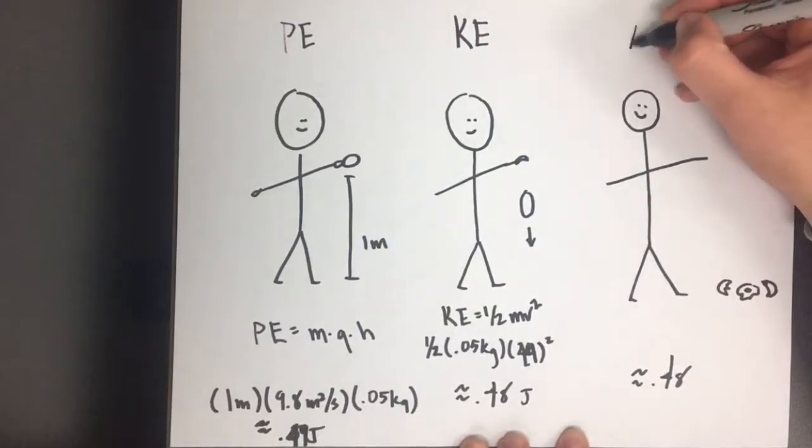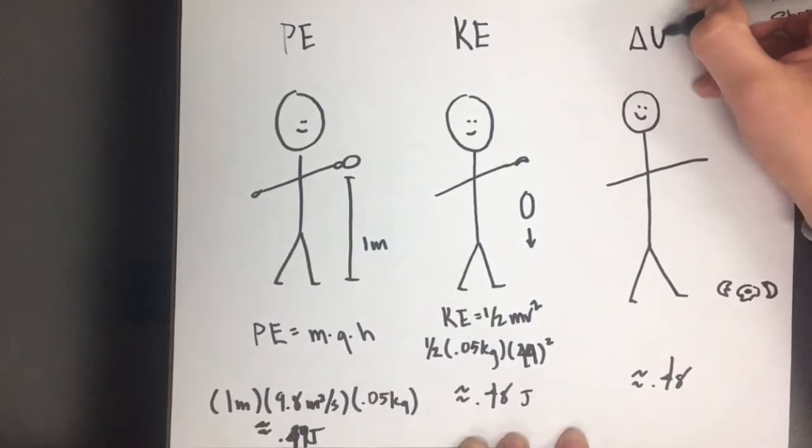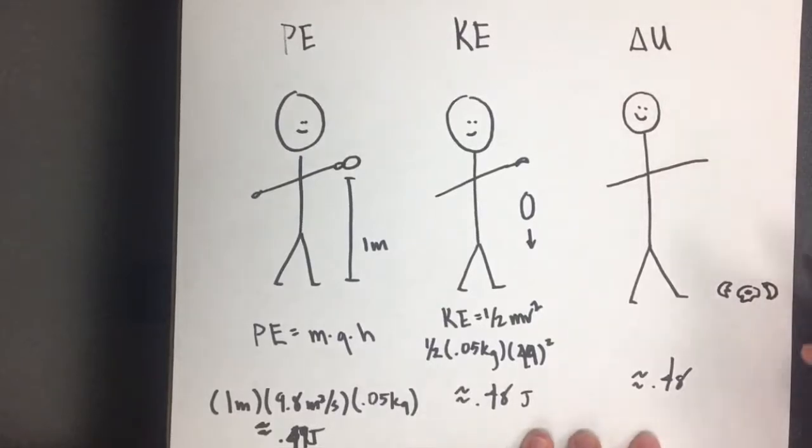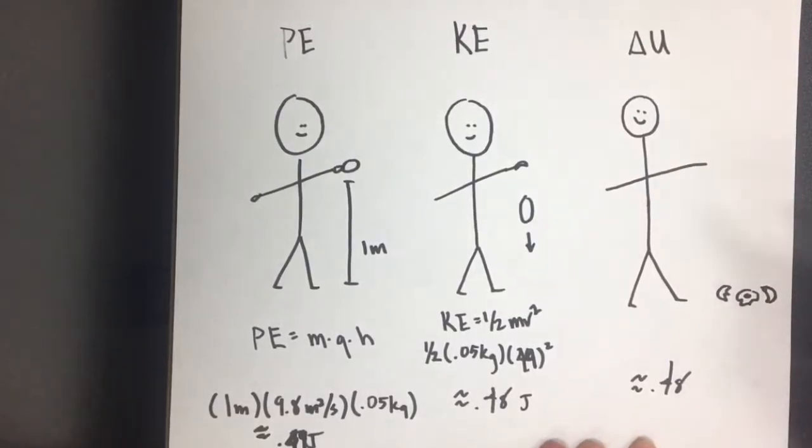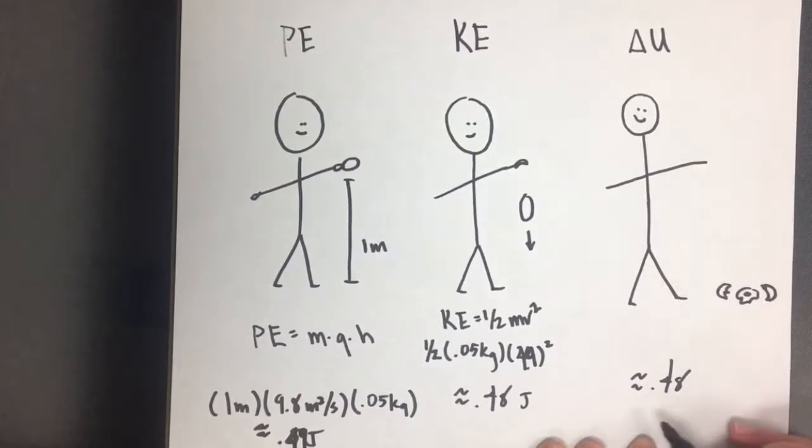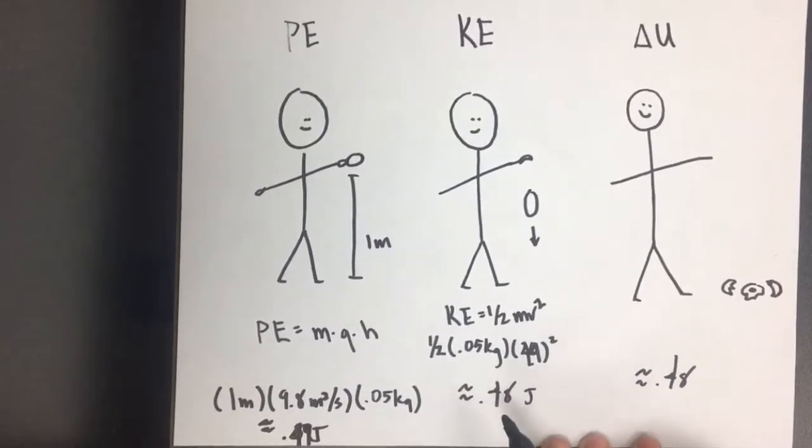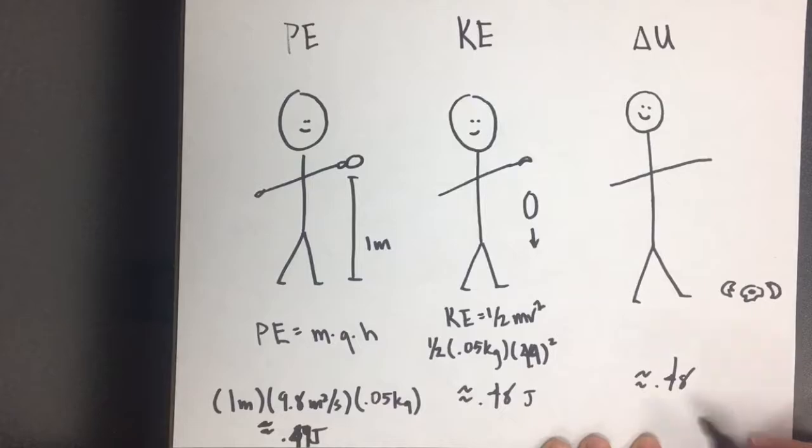Lastly, the kinetic energy will be converted to a change in internal energy. This we will see when the egg cracks when it hits the surface. The amount of energy it takes to crack the egg will be about equal to the kinetic energy of about 0.48 joules.